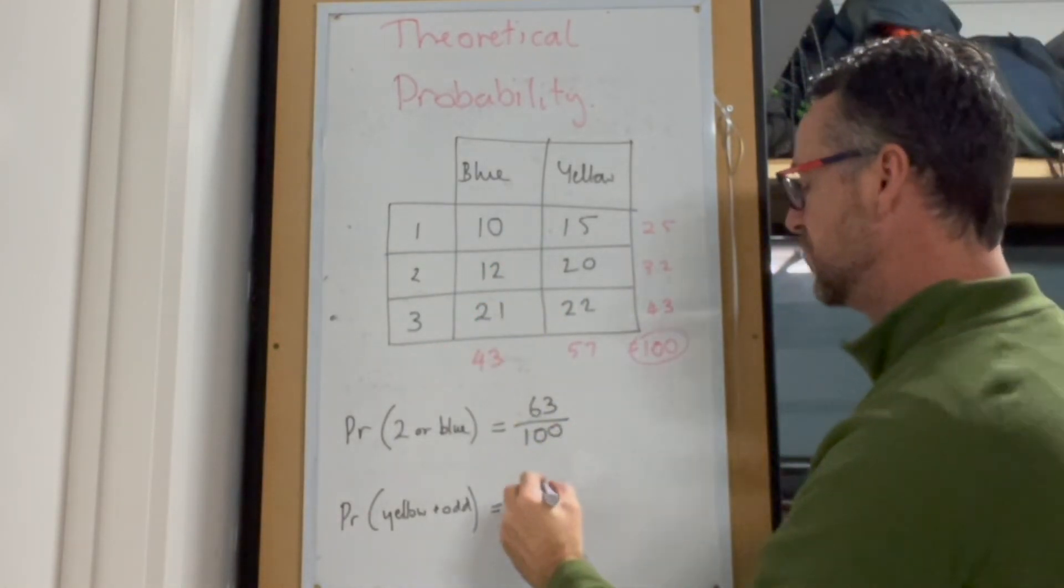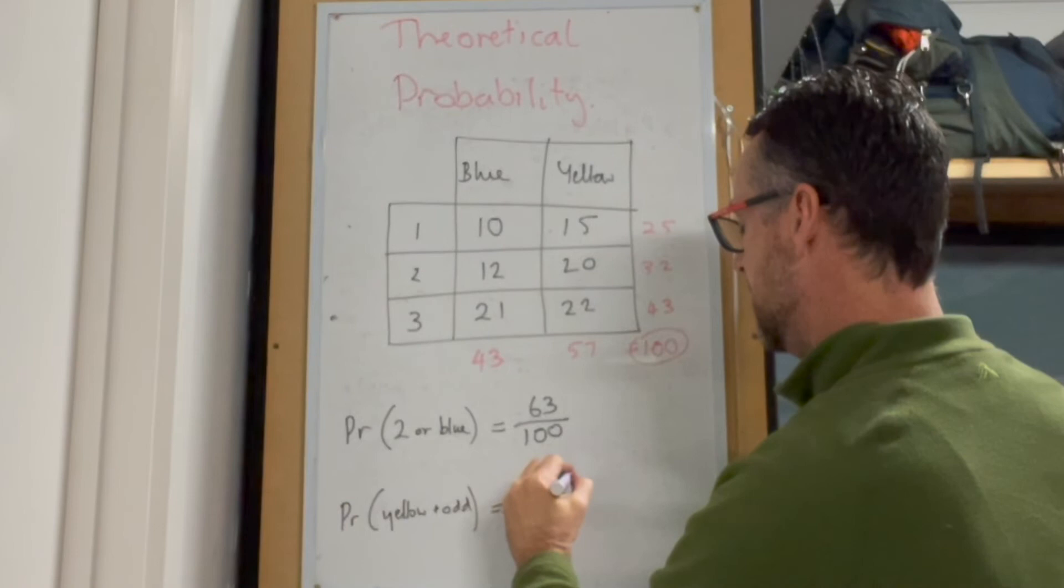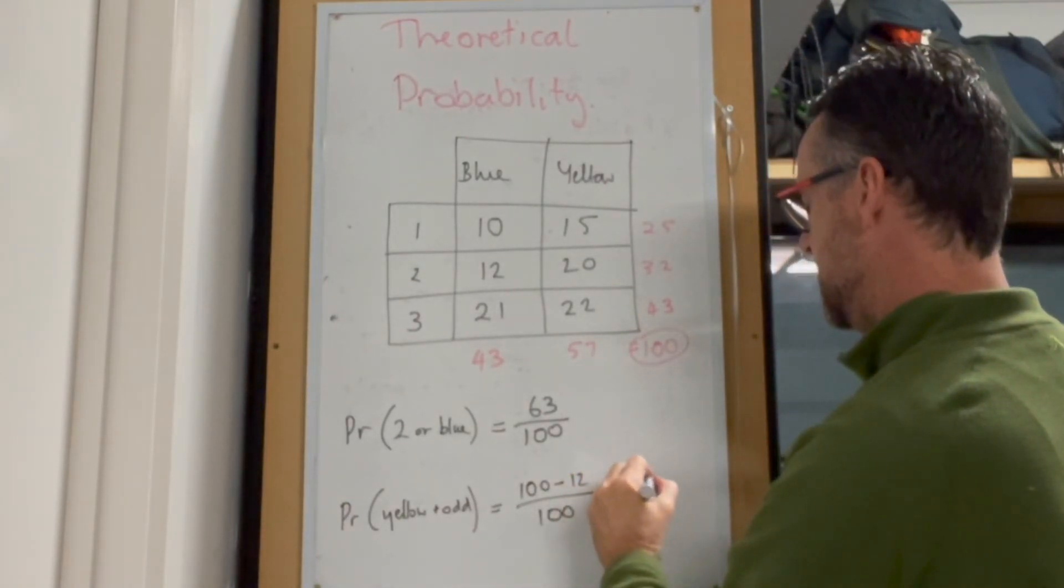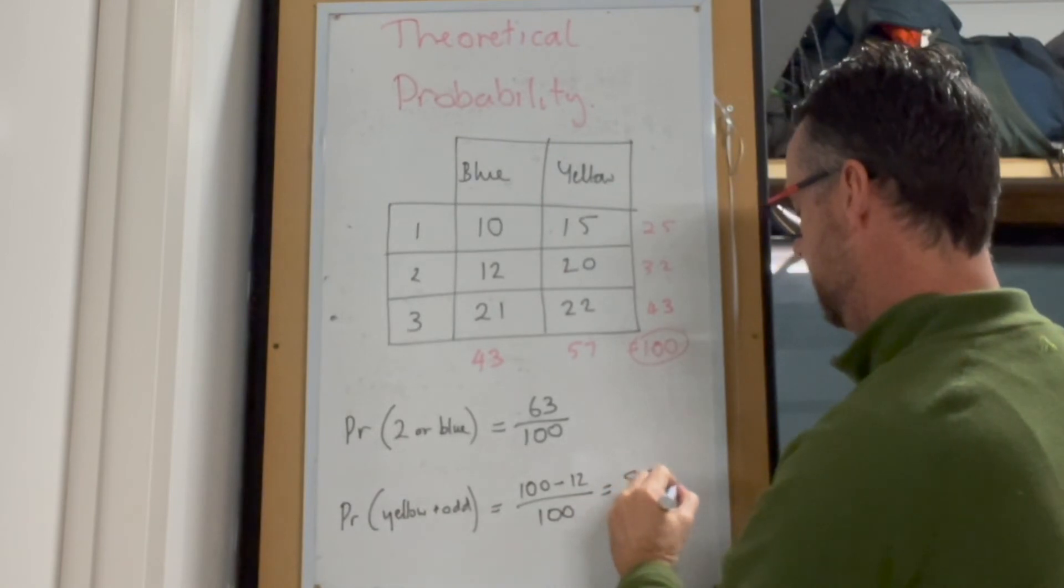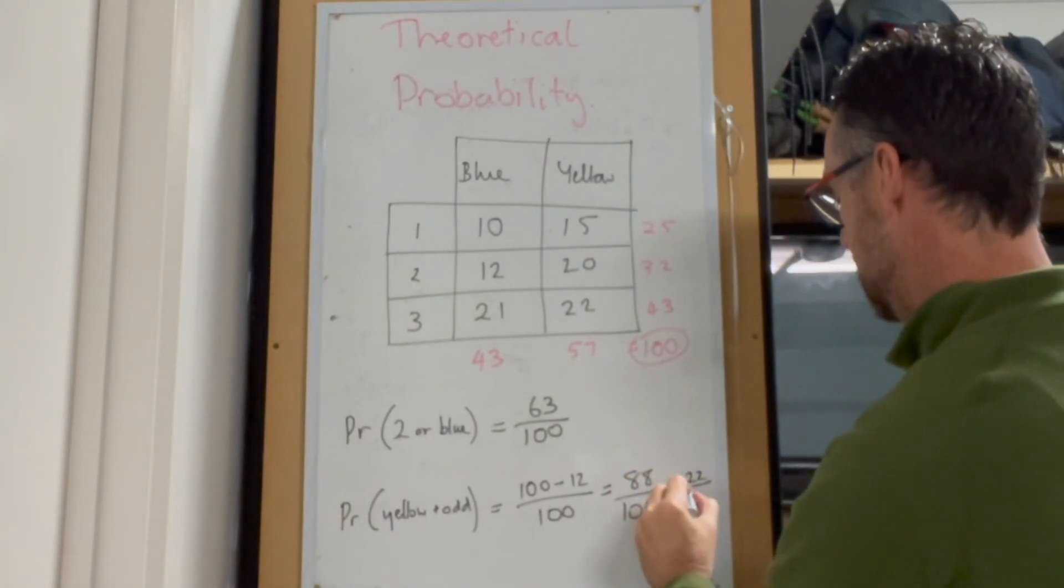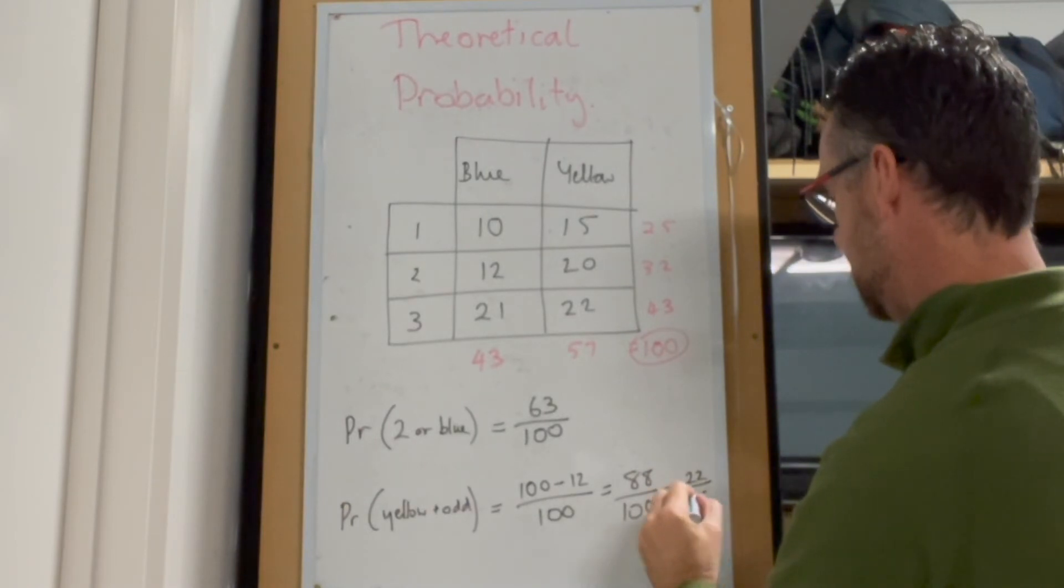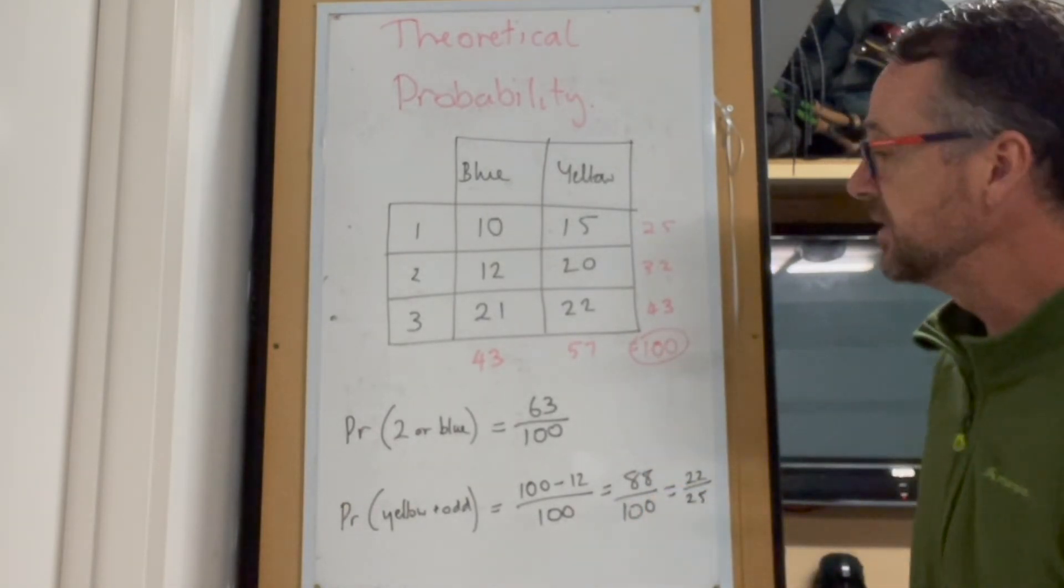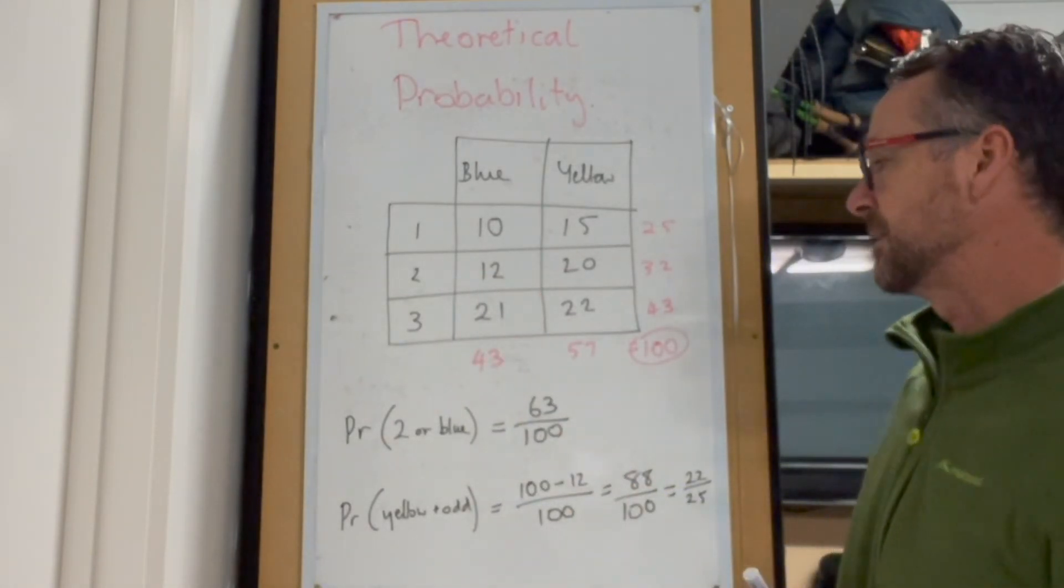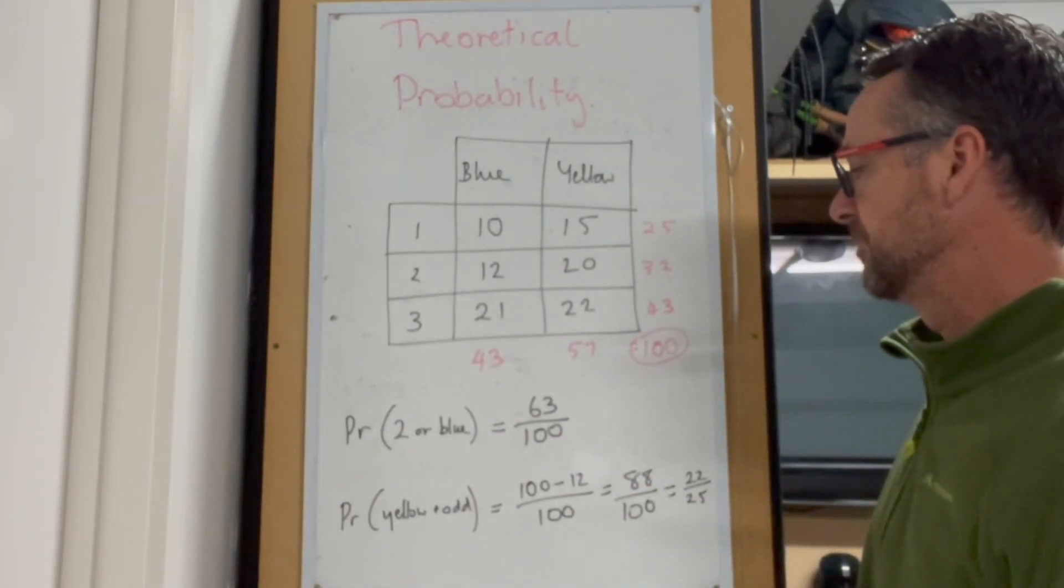So in actual fact, you could do 100 take away 12 over 100, equals 88 over 100. And that's going to end up being 22 over 25 as the probability. So in this case, it was easier to actually find out what the option of it not being something was rather than it being something.